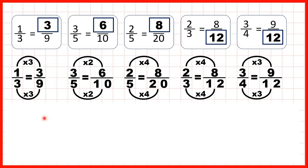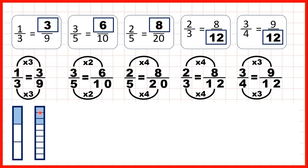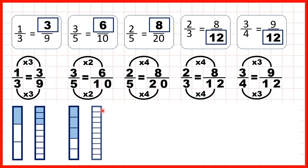And we can see what we're doing here with fraction bars. One third is equivalent to three ninths — we can see that if we shade in three of these ninths, we have the same amount in both fraction bars shaded. Now, three fifths: if we want to find an equivalent fraction with a denominator of ten, we can split our fraction bar into ten pieces, and we can see that we need to shade six of those pieces. So it's really important to understand that six tenths is not larger than three fifths — six tenths is equal to three fifths.